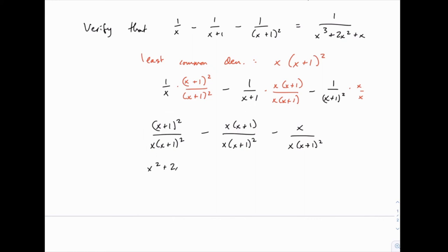So x plus 1 squared is x squared plus 2x plus 1. x times x plus 1 is x squared plus x, and since we're subtracting, we'll distribute that minus sign as well, minus x squared minus x, and then minus x again for the last fraction, and all of that divided by x over x plus 1 squared. Now when you do this, notice that the x squareds cancel each other, and then the 2x cancels with these 2 minus x terms. So all that's left in the numerator is 1 over x times x plus 1 squared. And if you expand out x times x plus 1 squared, you'll notice that you get exactly x cubed plus 2x squared plus x.